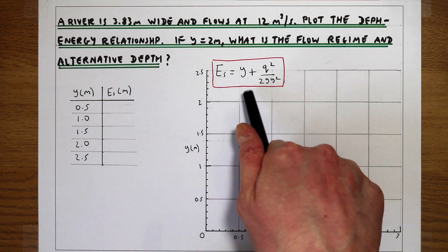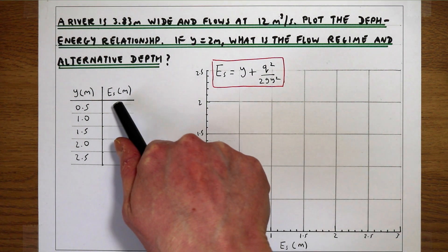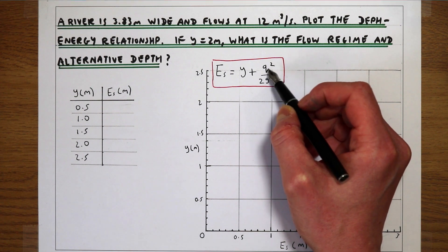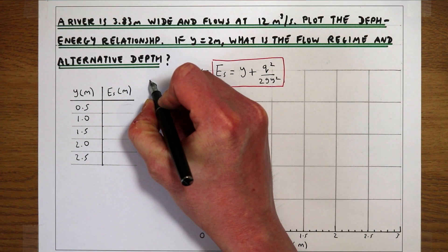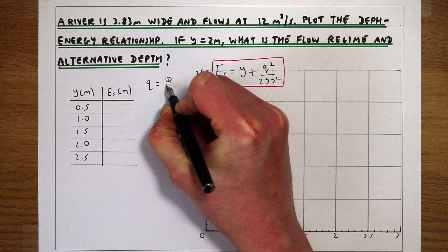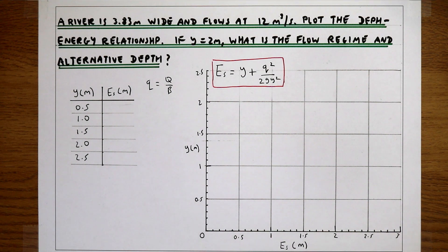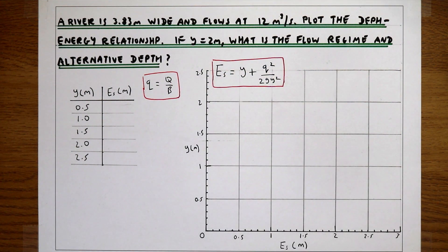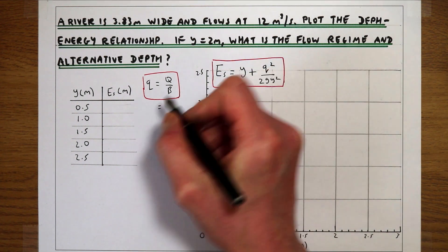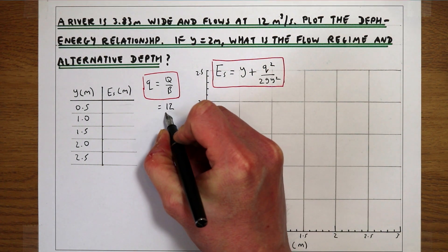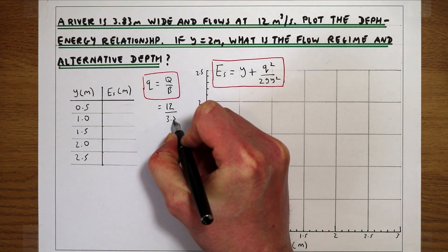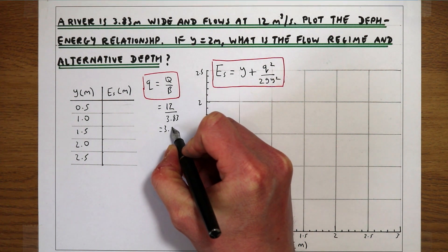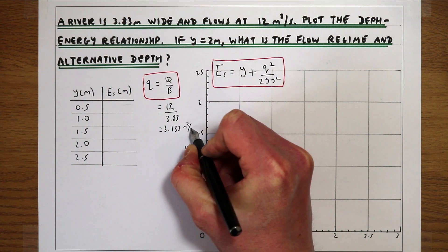We want to use the specific energy equation to calculate what the specific energy is at these depths. We have the y term to plug in but we don't have the small q term — the flow per unit width. We know that small q equals big Q over the channel's width, so our flow per unit width is the total flow divided by the width of the channel. Our total flow is 12 meters cubed per second and the width is 3.83 meters, giving us a small q of 3.133 meters squared per second.